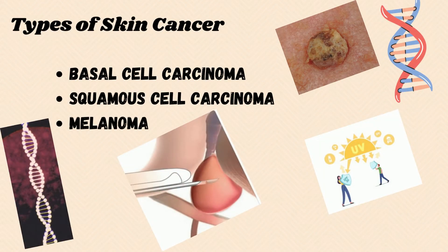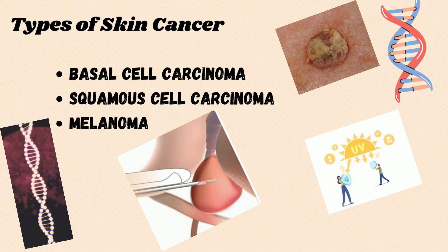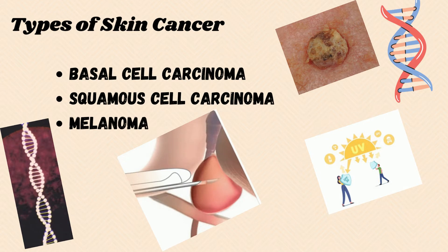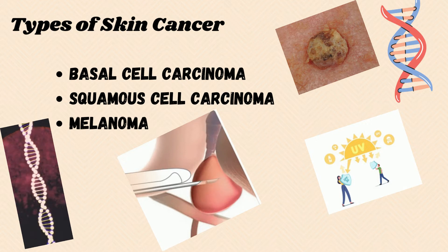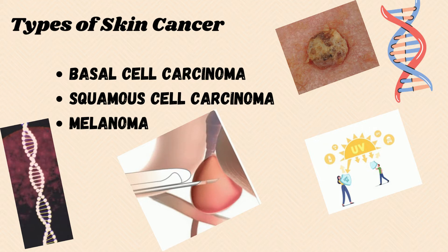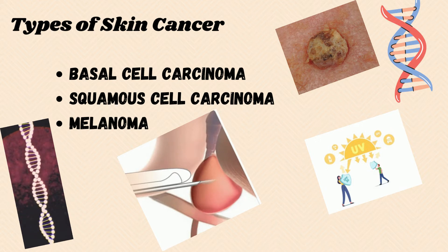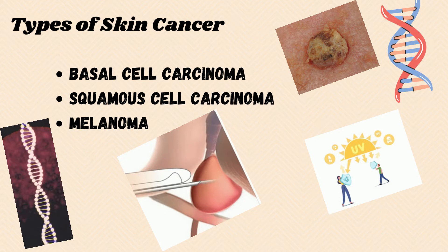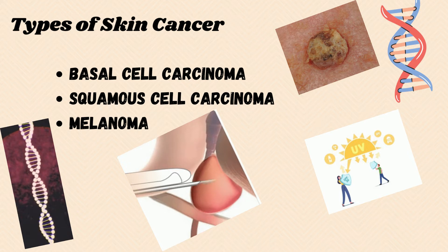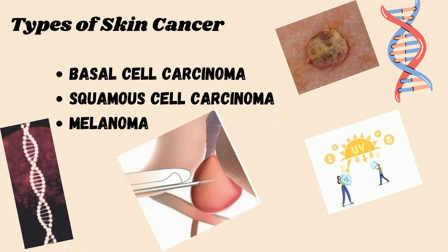There are three major types of skin cancer: basal cell carcinoma, squamous cell carcinoma, and melanoma. Most skin cancers are caused by exposure to ultraviolet light. When you don't protect your skin, UV rays from sunlight or tanning beds can damage your skin's DNA. When the DNA is altered, it can't properly control skin cell growth, leading to cancer.